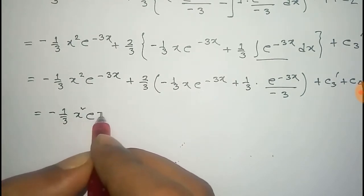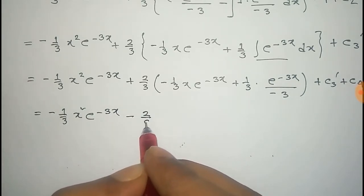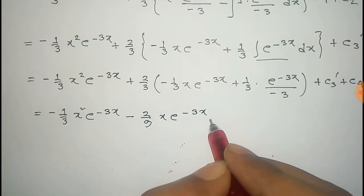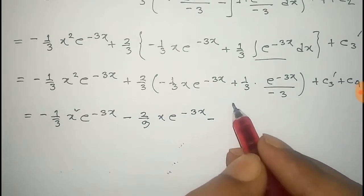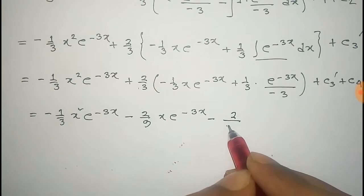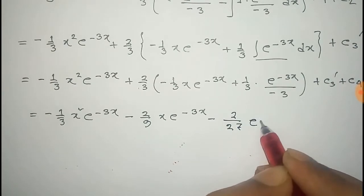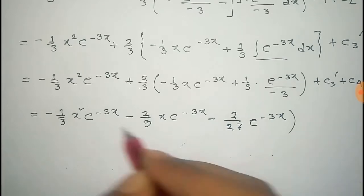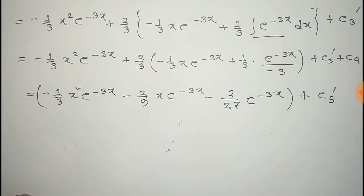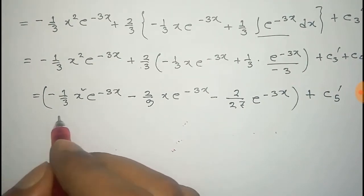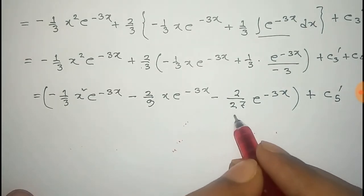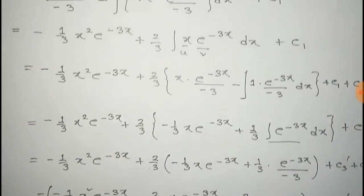So that equals minus one third x squared e to the power minus 3x, minus 2 by 9 x e to the power minus 3x. After multiplying out the remaining term — two thirds times one third times one over minus 3 — it gives minus 2 by 27 into e to the power minus 3x, and we take the combined constants as c5 prime. Thus we get the integral of x squared e to the power minus 3x equals minus one third x squared e to the power minus 3x, minus 2 by 9 x e to the power minus 3x, minus 2 by 27 e to the power minus 3x, plus constant c.